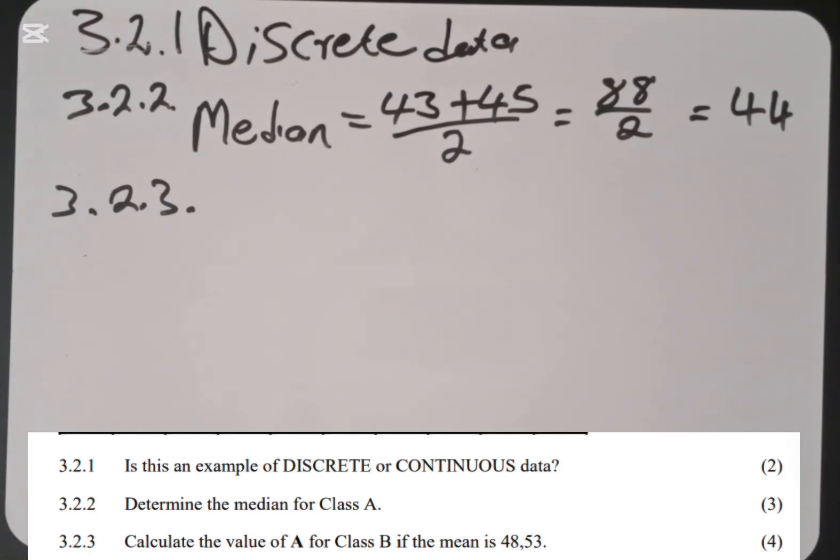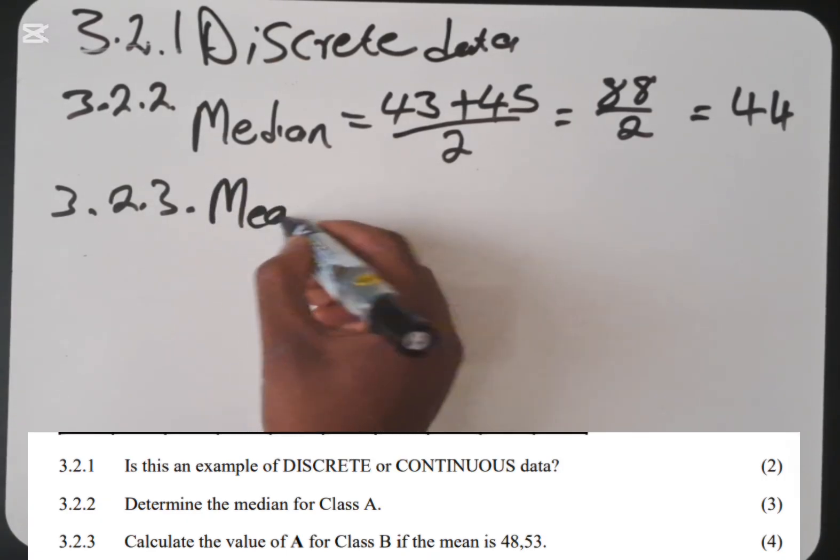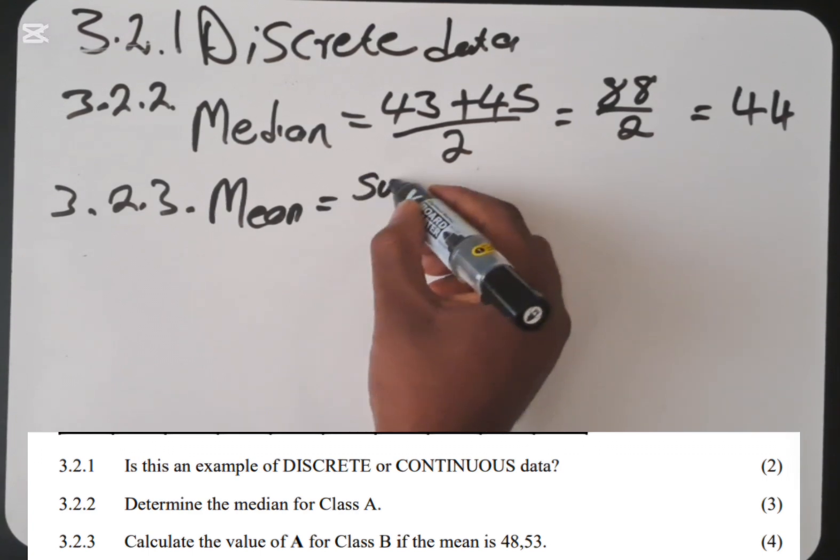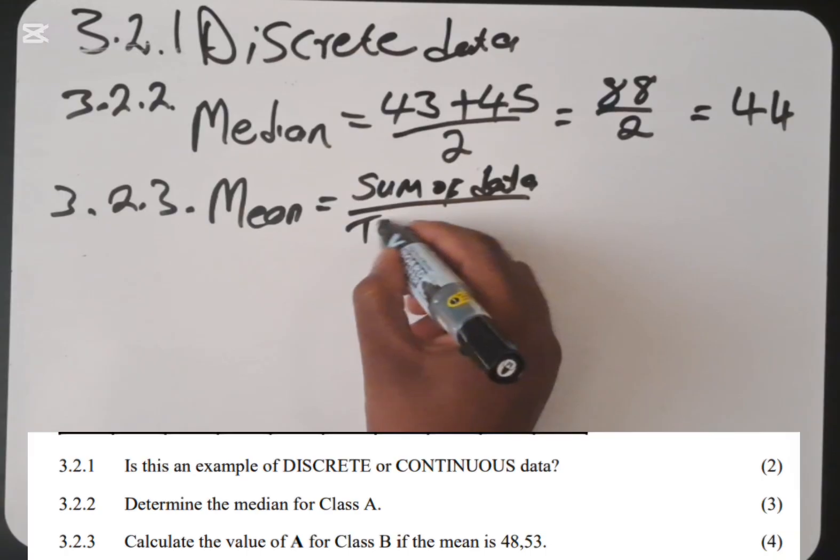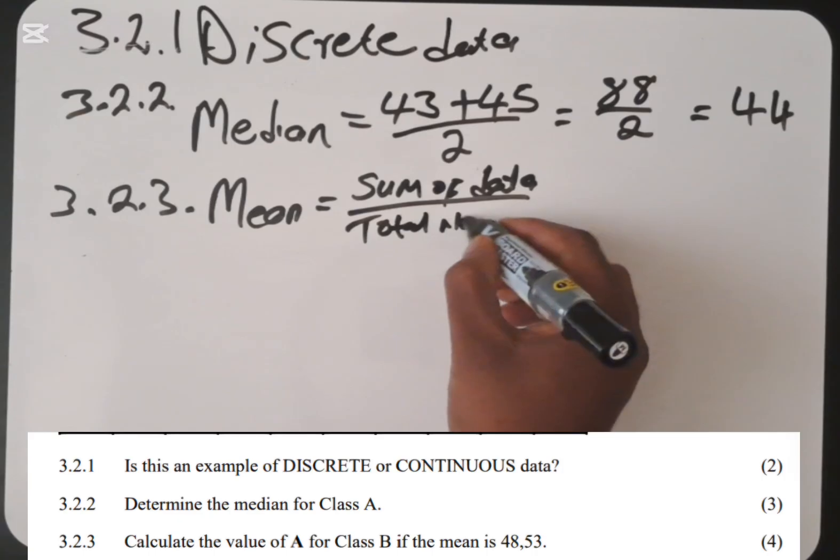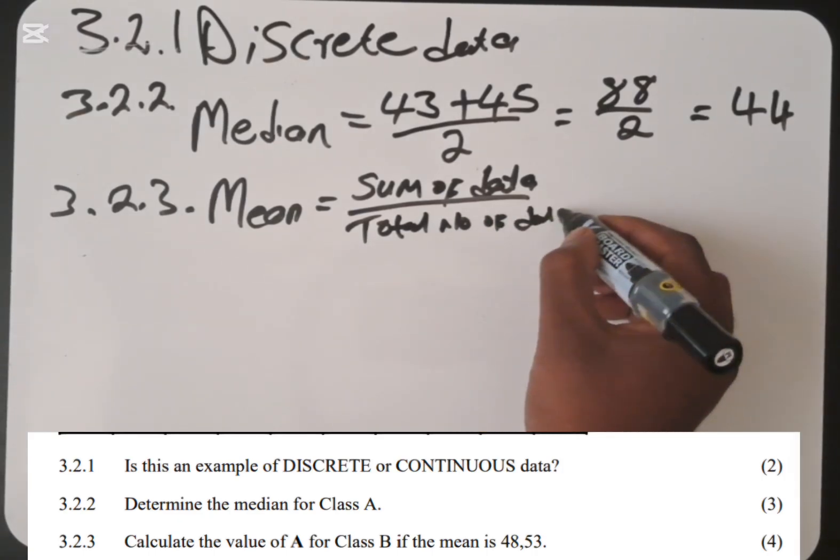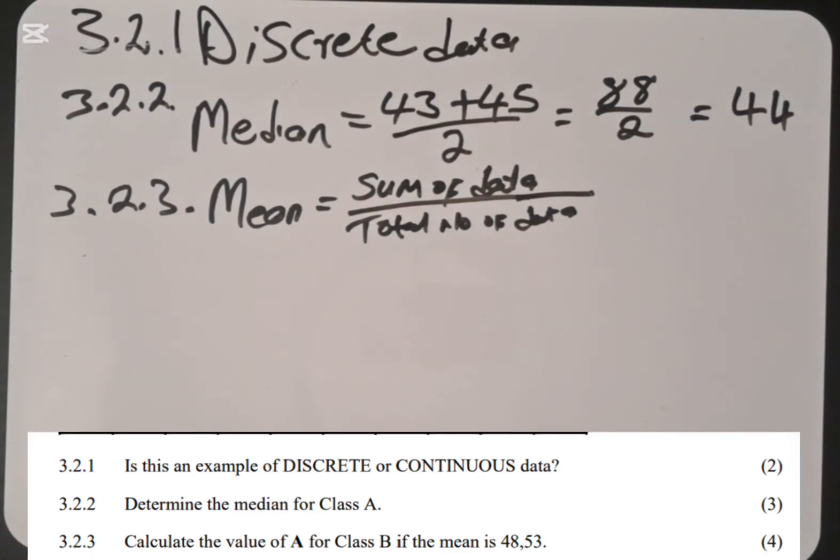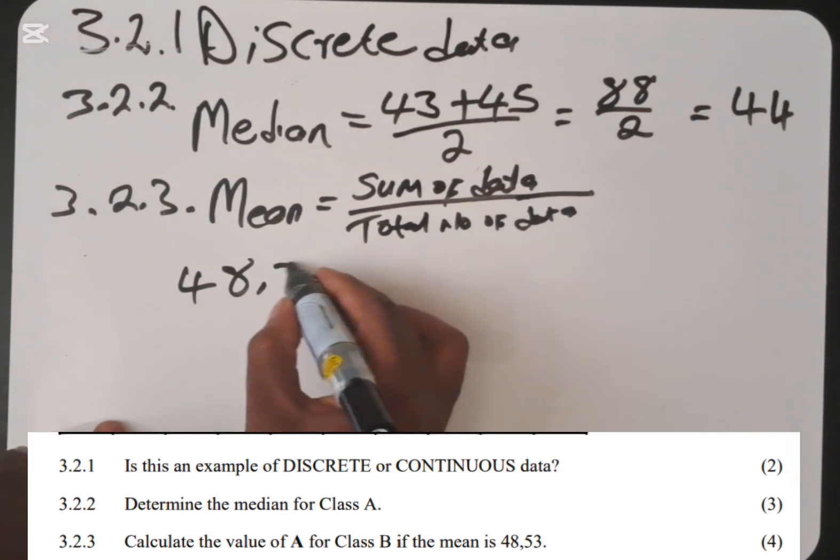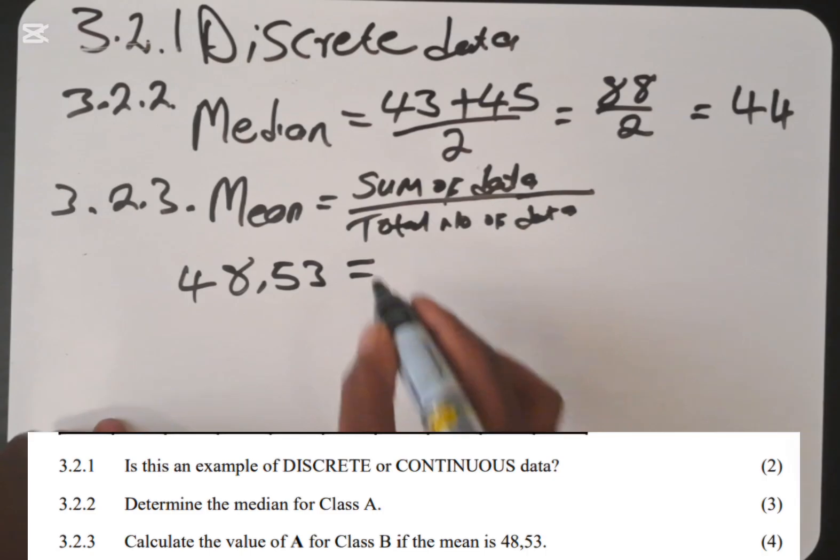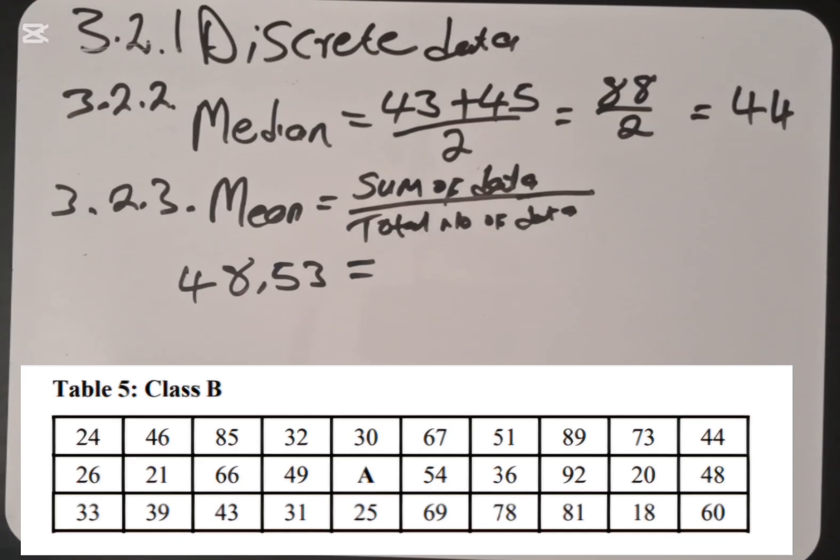So because now we are saying calculate the mean, we must use the mean equation. The mean is equal to the sum of data divided by the total number of data. And if you can check here, the mean is given. We have the mean. So we are going to write 48.53, which is equal to the sum. We must add all the information, all these numbers that we have in table B.